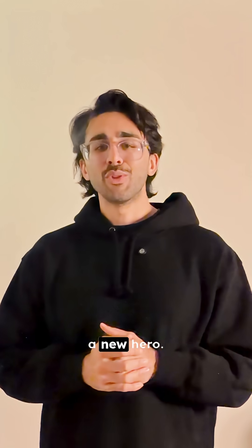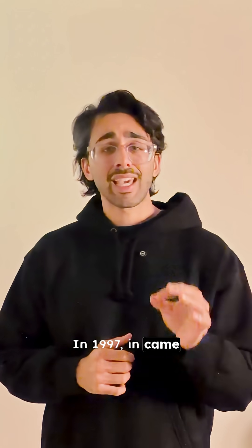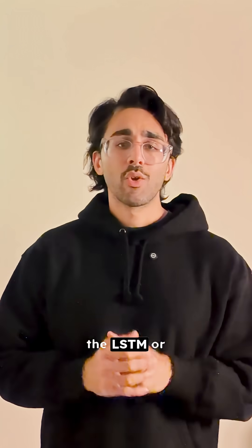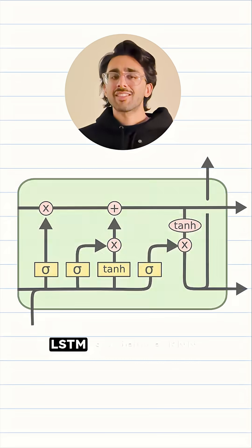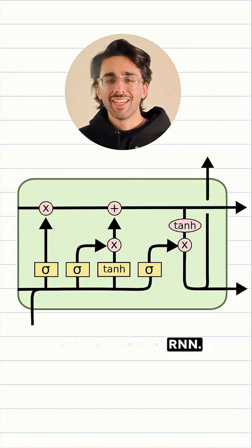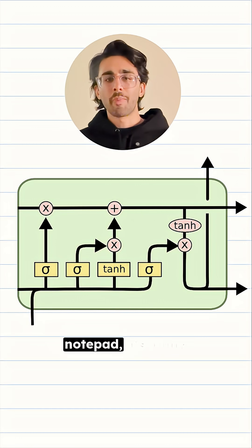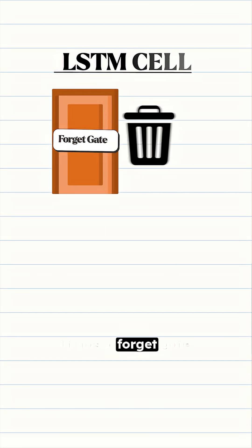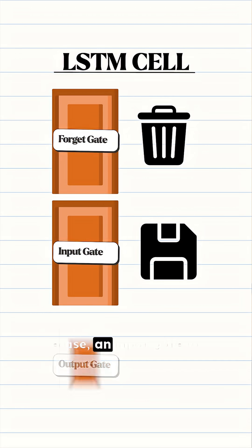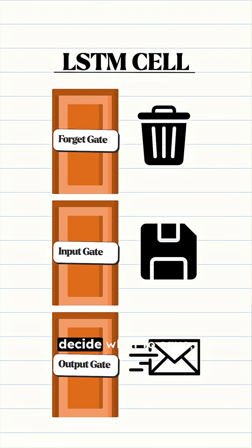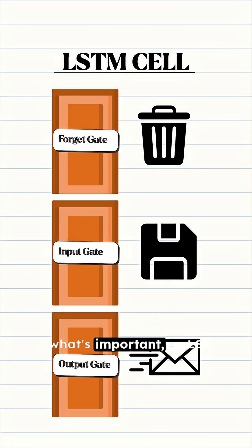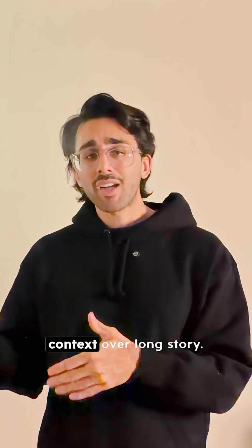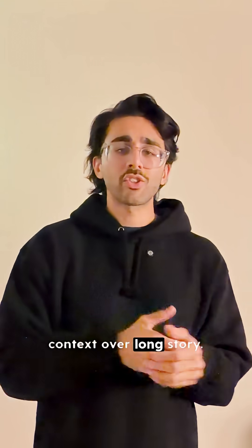So this plot needs a new hero. In 1997, in came the LSTM, or long short-term memory network. LSTM is a deluxe RNN. It's not just a notepad — it's a tiny computer with gates. It has a forget gate to decide what to erase, an input gate to decide what to save, and an output gate to decide what to share right now. It learns what's important. So LSTMs could finally track context over a long story.